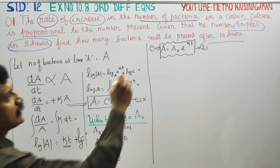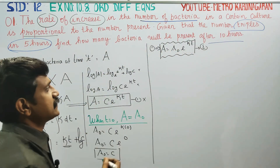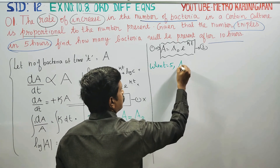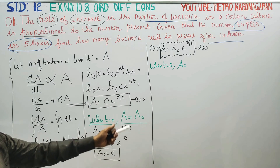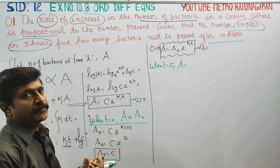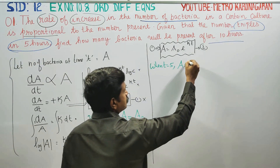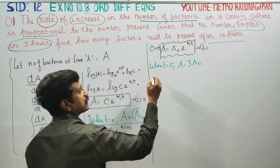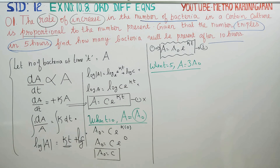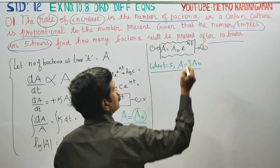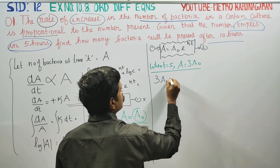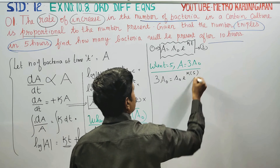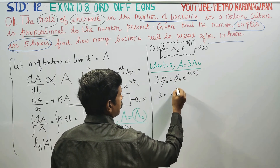Given that the number triples in five hours: when T is equal to 5, the next condition applies. When T is equal to 5, A is equal to 3A₀. Substituting into the equation, e^(5k) equals 3A₀ divided by A₀ — A₀ cancels — giving 3 equals e^(5k).